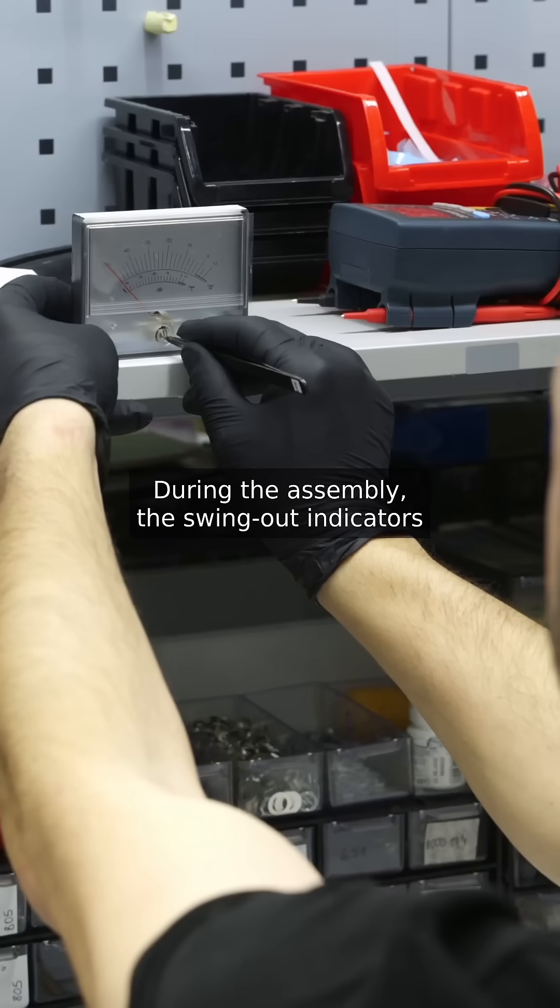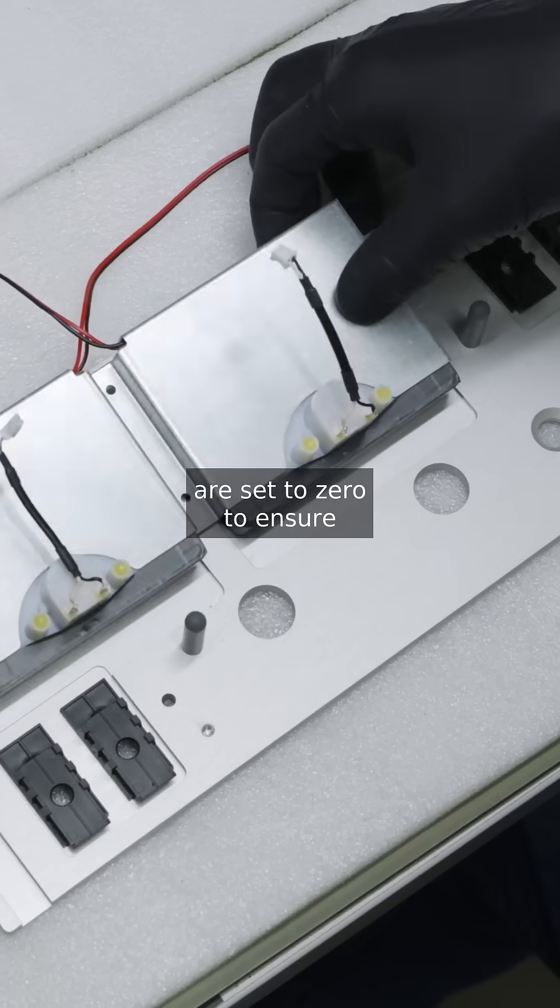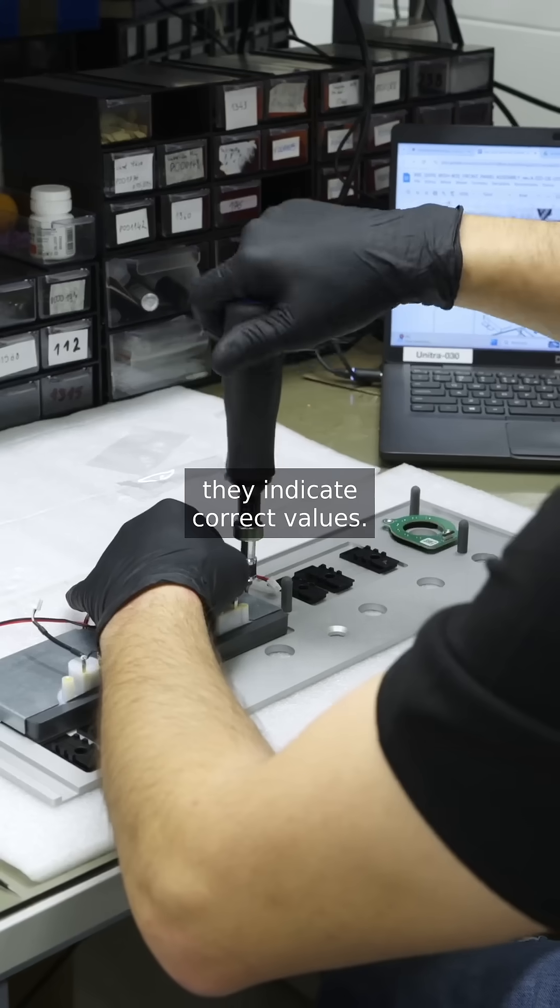During the assembly, the swing-out indicators are set to zero to ensure they indicate correct values.